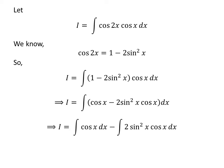So I is equal to the integral of cosine of x with respect to x, minus the integral of 2 times sine squared of x times cosine of x with respect to x. We know the antiderivative of cosine of x is sine of x, so I is equal to sine of x minus the integral of 2 times sine squared of x times cosine of x with respect to x.